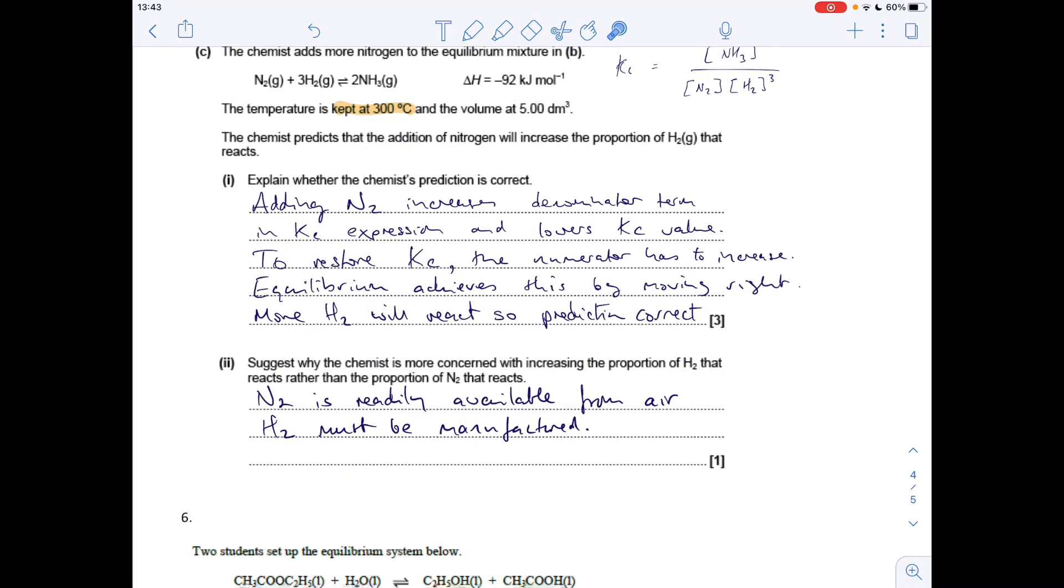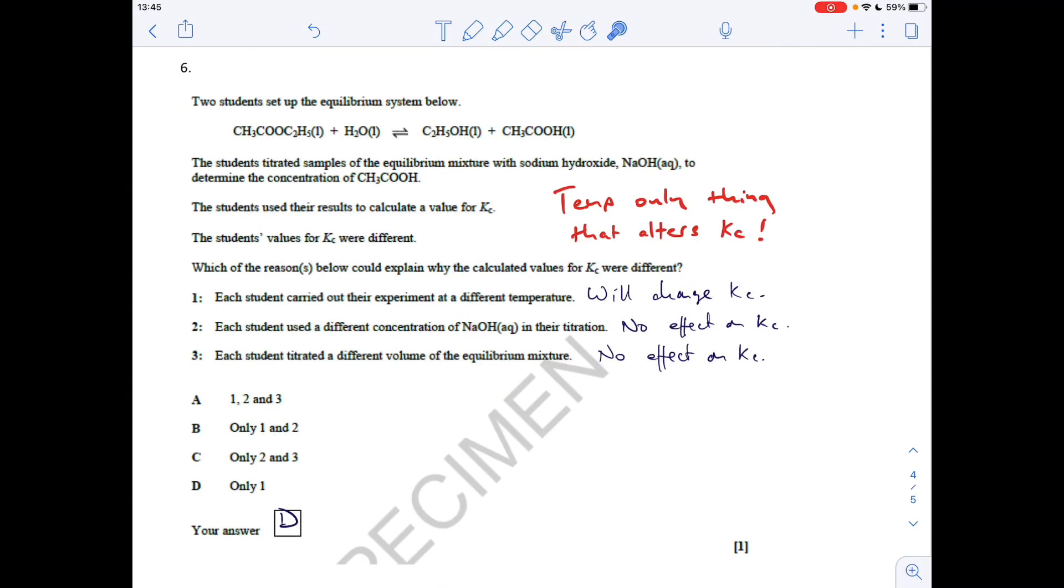Next part: suggest why the chemist is more concerned with increasing the proportion of hydrogen that reacts rather than the proportion of nitrogen. It's all to do with the availability of those two gases. Nitrogen is readily available from air - remember air is about four-fifths nitrogen. Hydrogen has to be manufactured.